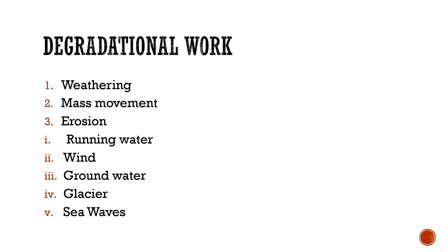Weathering is the physical disintegration and chemical decomposition of rock. Mass movement is the downfall of materials such as water, soil, mud, etc., under the influence of gravity — for example, a sudden happening on a mountain. Mass movement and weathering involve physical and chemical rock decomposition.